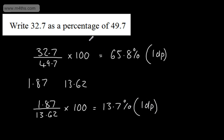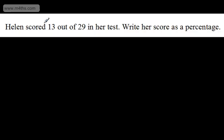Okay, let's have a go at another one. Helen scored 13 out of 29 in her test. Write her score as a percentage. So 13 out of 29. I can see that I'm not going to be able to scale this up to 100. We've got 29 which isn't going to be a factor. So all I'm going to do is go ahead and multiply by 100. So straight through the calculator,